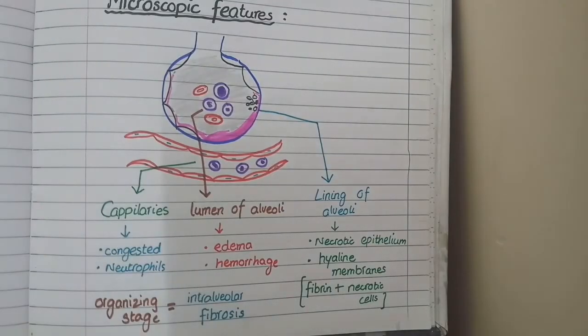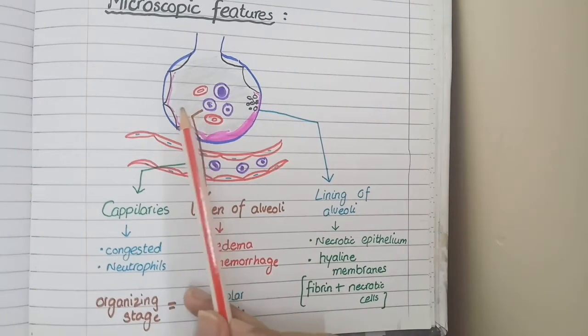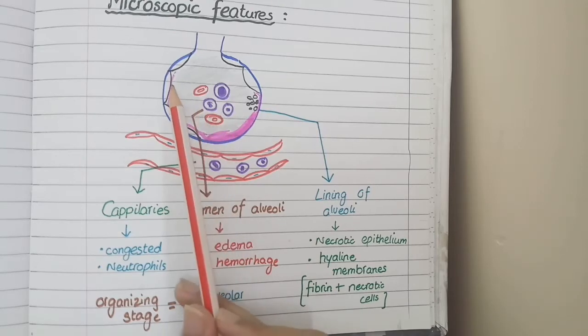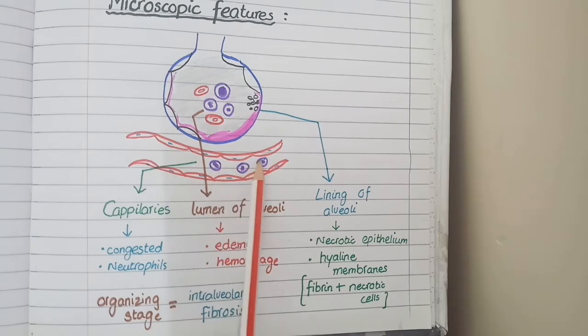Now for microscopic features you need to see this diagram and focus on three things. Firstly, there is lumen of alveoli. Secondly, there is this lining of alveoli. And thirdly, there are capillaries surrounding the alveoli. We will first focus on the capillaries.